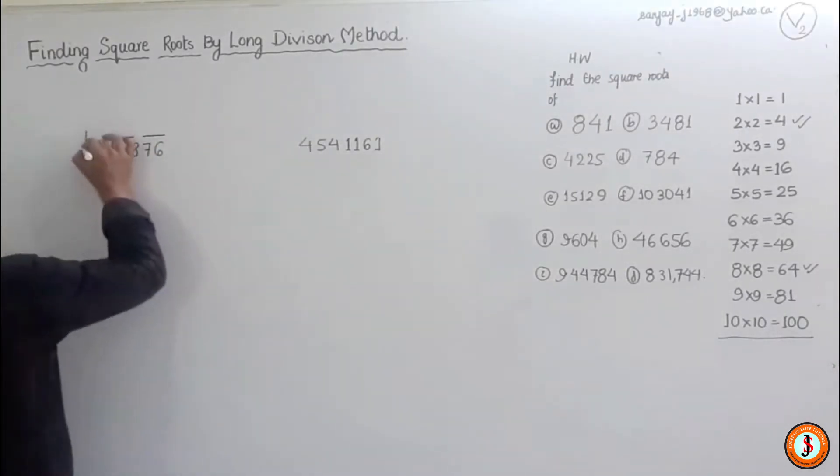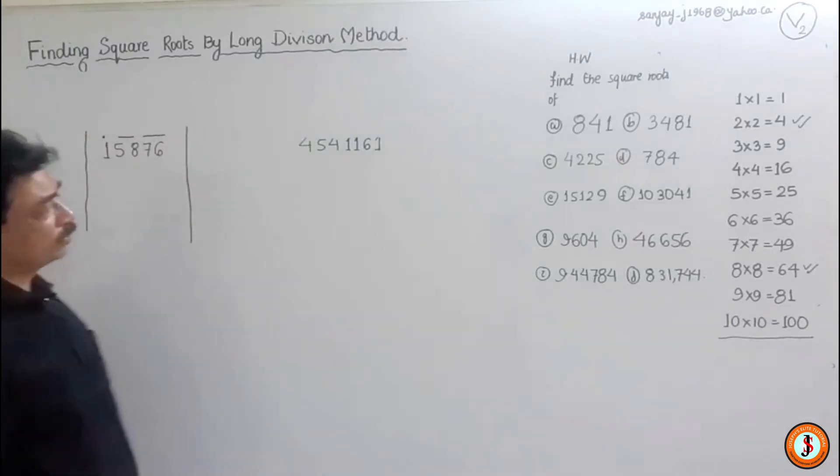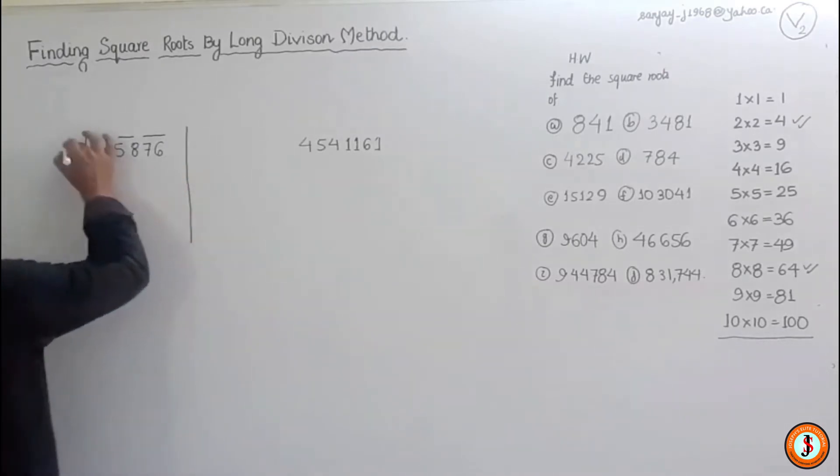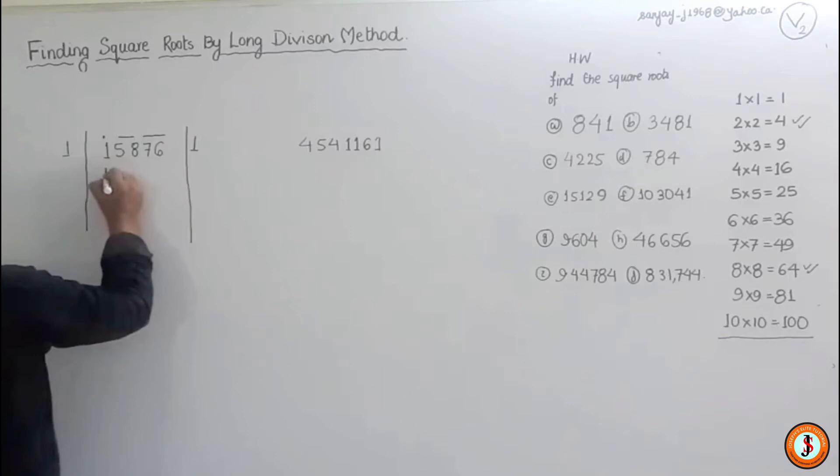Now we go with one. Because the first digit is one, it's unpaired so that has to be tackled first. Obviously one times one is one, so this goes. Now we've got two over here. We get 58 down.